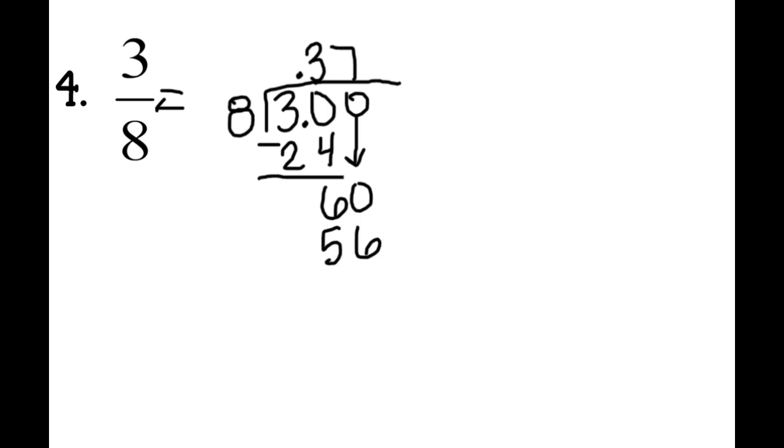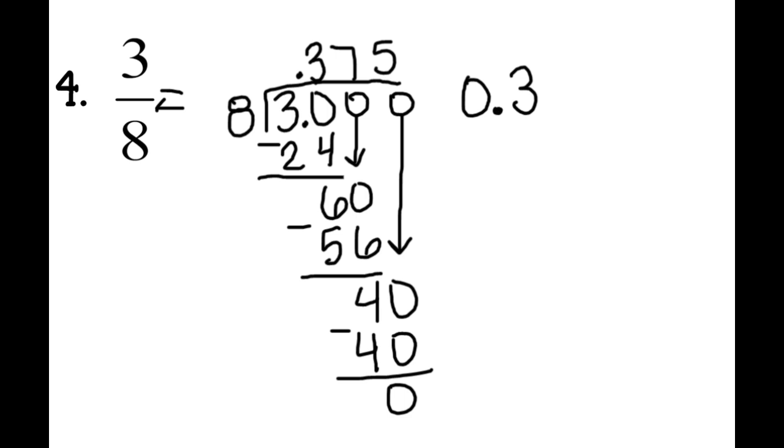7 times 8 is 56. That's my least favorite multiplication problem. I always missed it when I was in third grade. 60 minus 56 is 4. Bring down another 0. Can 8 go into 40? Yep, it goes in 5 times. 5 times 8 is 40. With 0 left over. So we have our decimal notation. The decimal notation of 3 eighths is 375 thousandths.